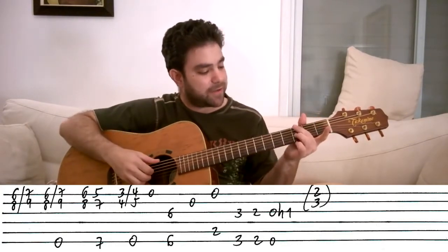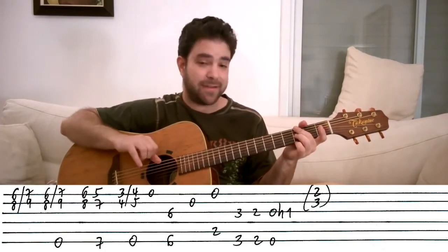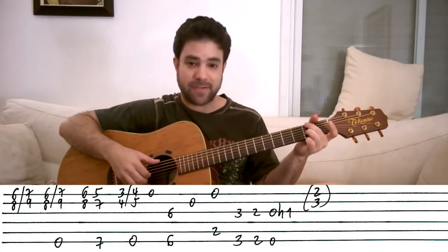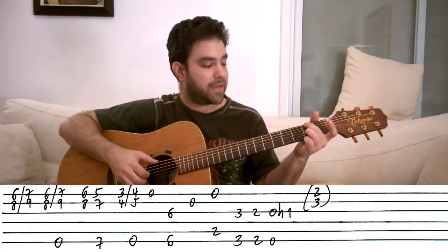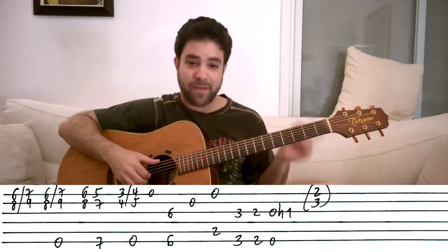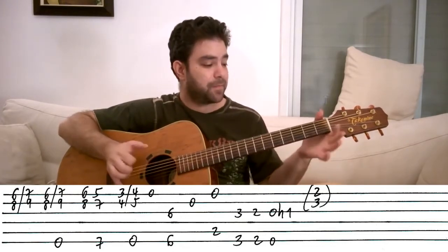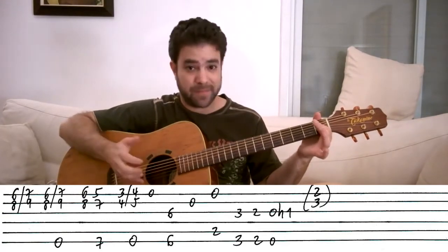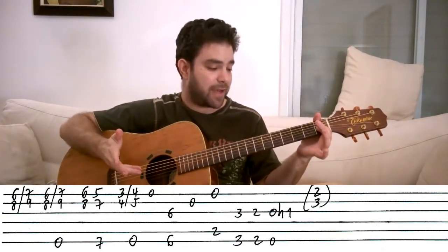So it's three and three on strings three and six, and then two and two on strings three and six. And then we play the open third and sixth strings and we hammer on one on the third string. This is E, an E chord outline.